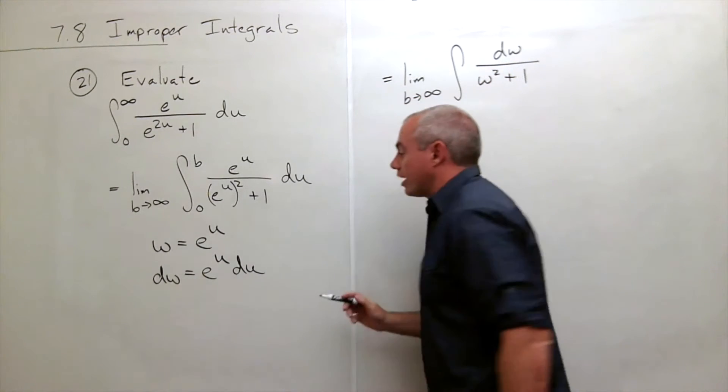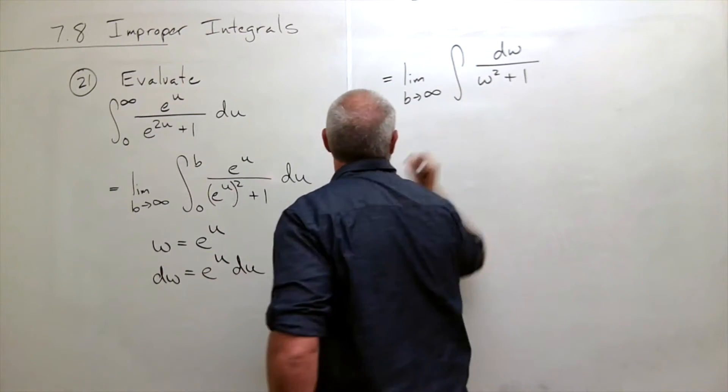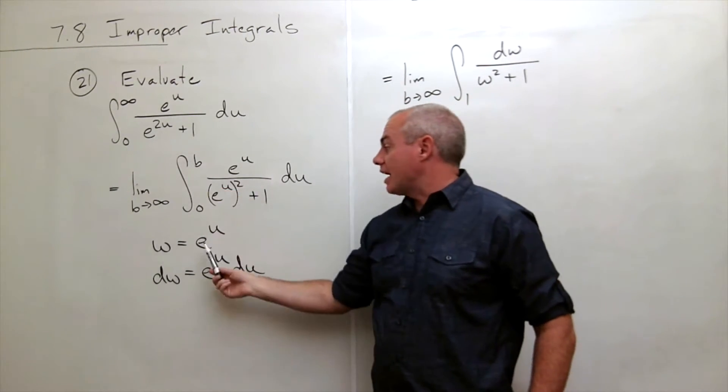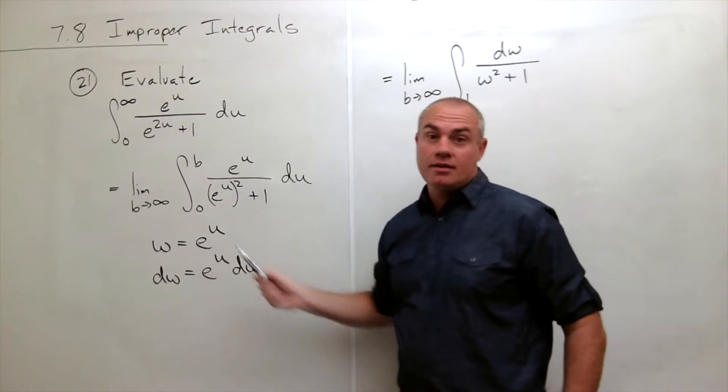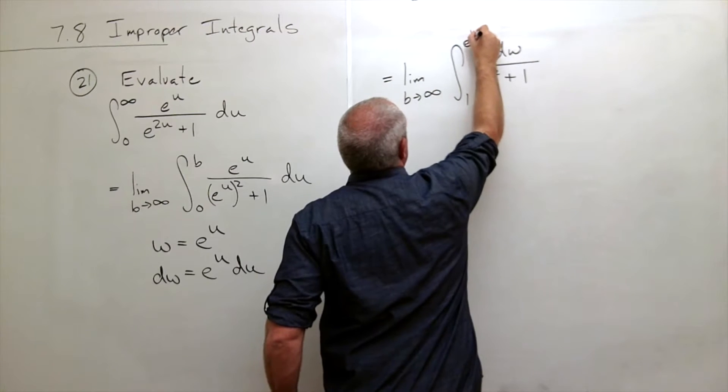And we're integrating from, if I plug in 0 I get e to the 0 which is 1, and if I plug in b I get e to the b. So this is e to the b.